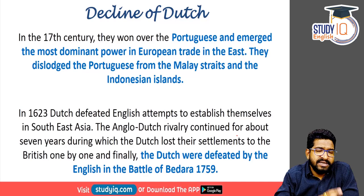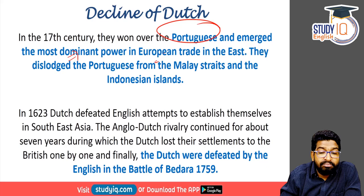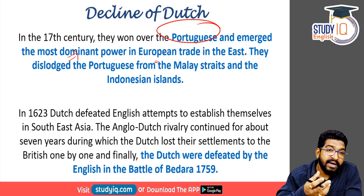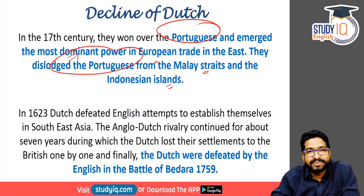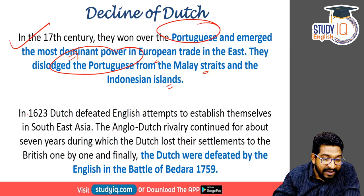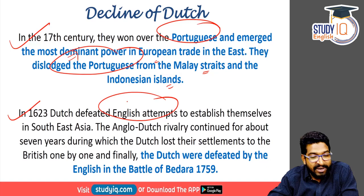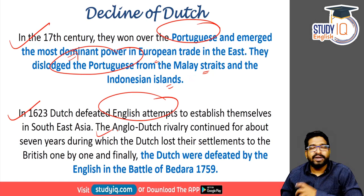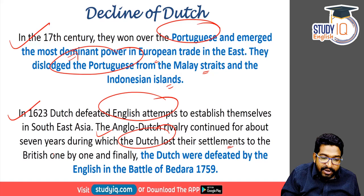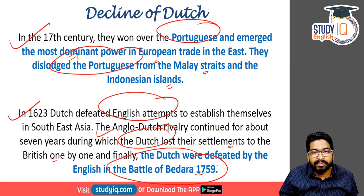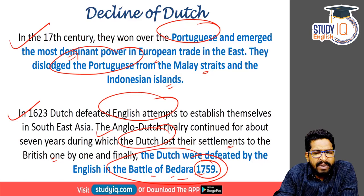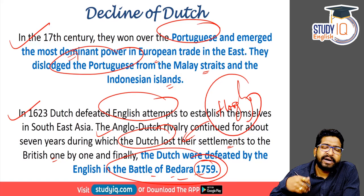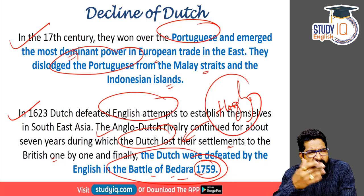The Dutch could not consolidate their power. In 1623 they even defeated English attempts to establish themselves in Southeast Asia. But the Anglo-Dutch rivalry continued for many years, and Dutch lost all its settlements to the British one by one. They were finally defeated in the Battle of Bedara in 1759 — also called the Battle of Hooghly — where the Dutch were defeated by the English.